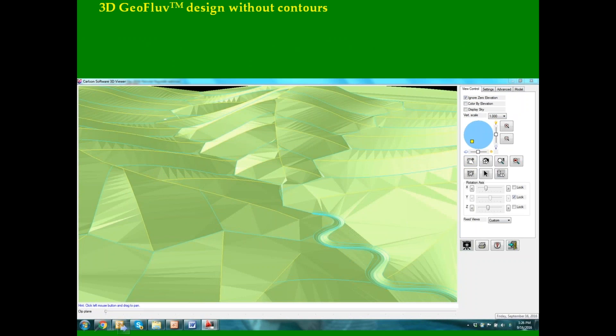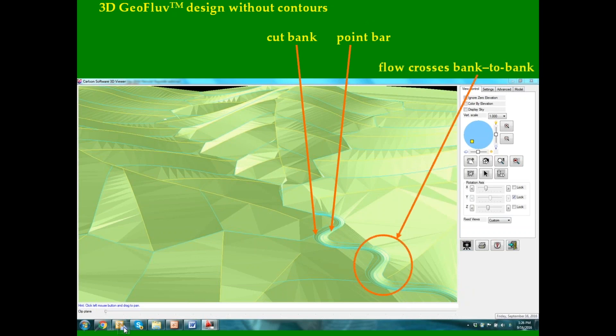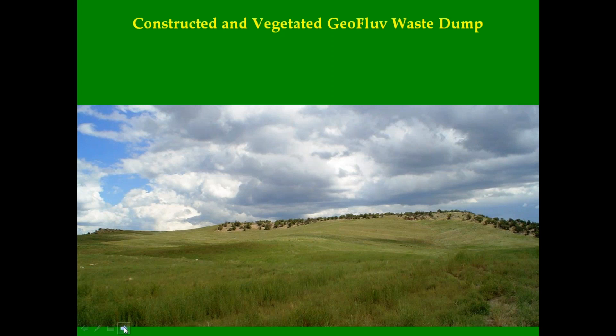Zooming in to part of the 3D design view, we can see the detail of the complex slope profiles, sub-watershed ridges and swales, and on the valley bottom channels the steeper cut bank on the outside of the bend and the flatter point bar on the inside of the bend. Note that the channel flow crosses from bank to bank just as a natural channel does. This image is a constructed and vegetated Geofluv waste dump that has these functional natural landform elements. All the land without trees is Geofluv reclamation that has sediment yield less than background.